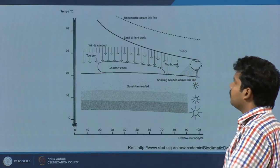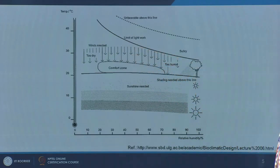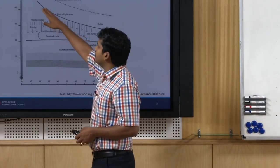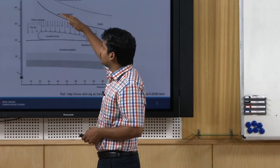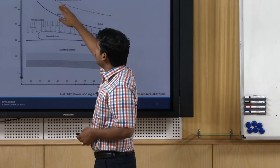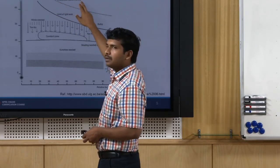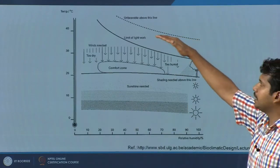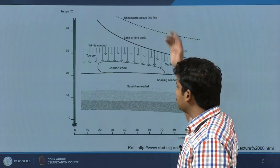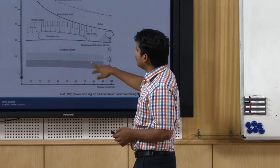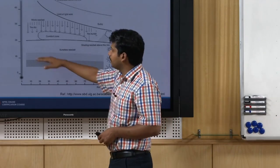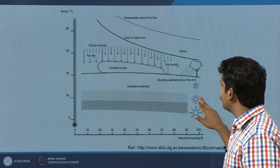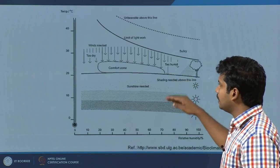There is a dark line indicating the limit for light, sedentary work — not very high metabolic rate. Beyond this limit you will likely get heat stroke or be really uncomfortable. A dotted line above marks 'unbearable,' where you get health impacts from extreme heat and sultriness. On the cooler side, below a certain line you need sun exposure, mild sun and good radiation, with more needed as temperatures drop further.